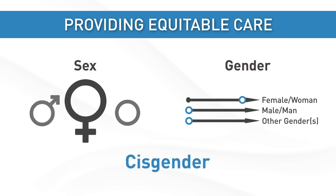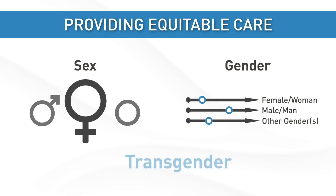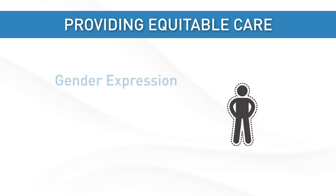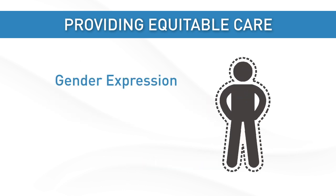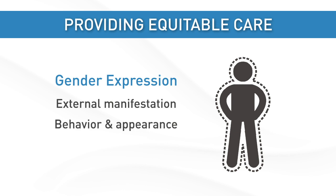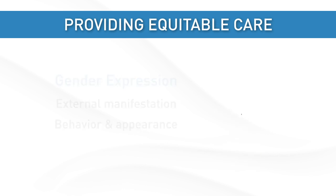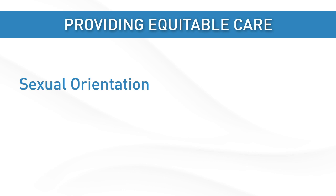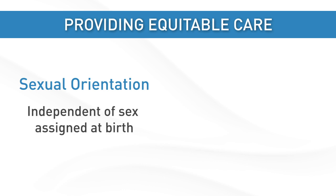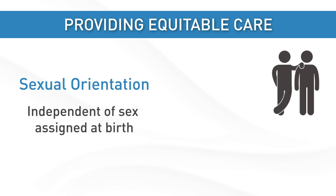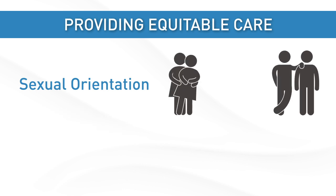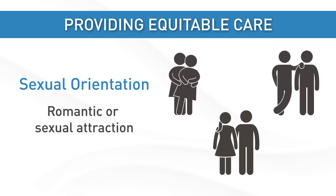A person's gender identity may match their sex assigned at birth — cisgender — or it may differ — transgender. Gender expression is a person's external manifestation of gender based on behavior and appearance. Sexual orientation is independent of sex assigned at birth and gender, and it refers to a person's romantic or sexual attraction.